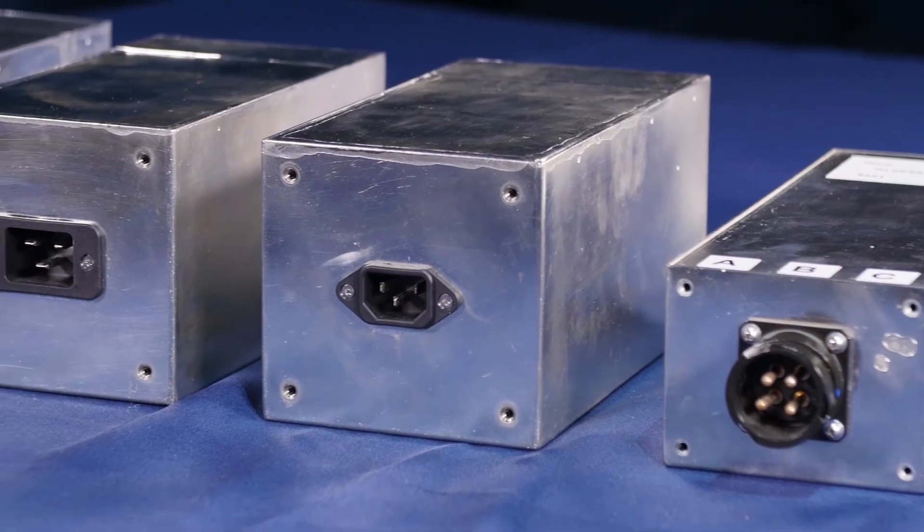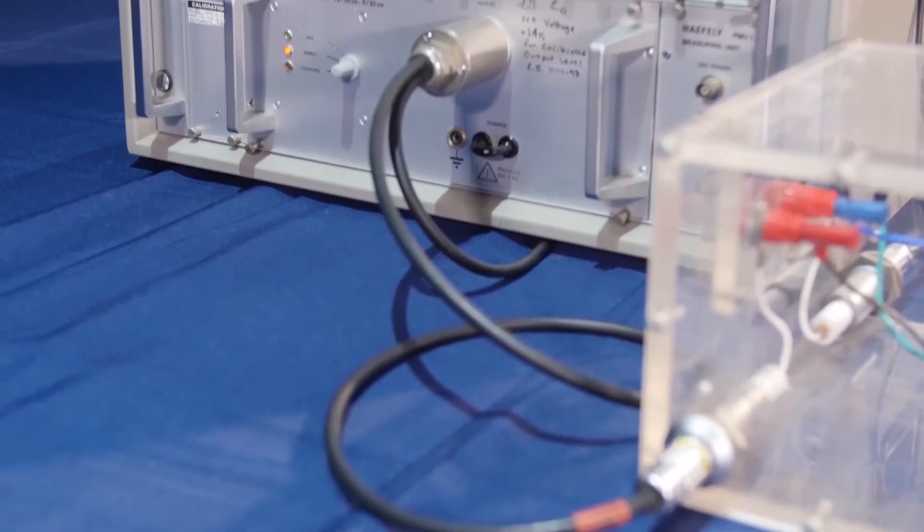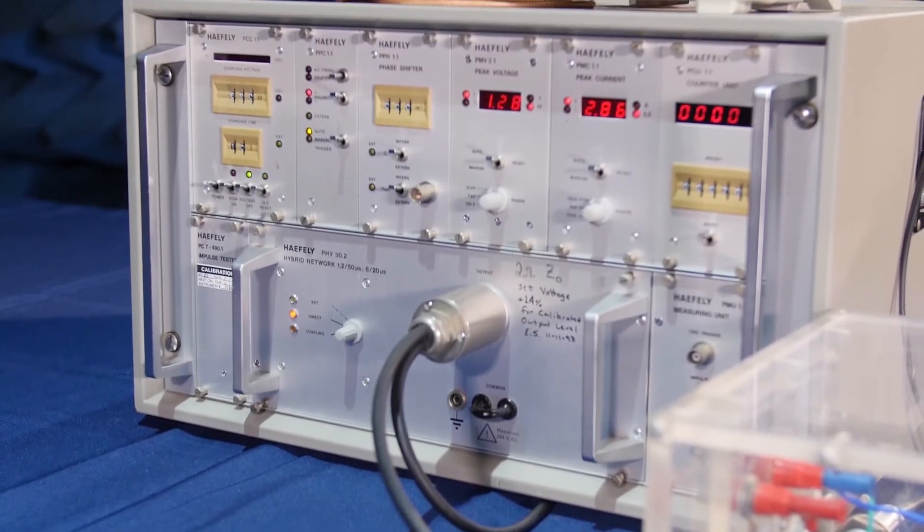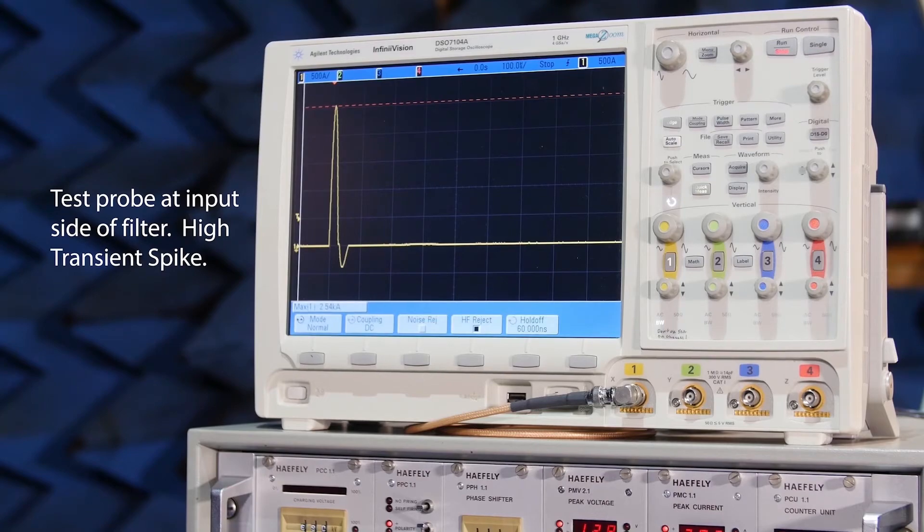These filters work by absorbing the harmful energy from HEMP, EMP, and even natural EMI events, buffering the power lines to critical electronics.